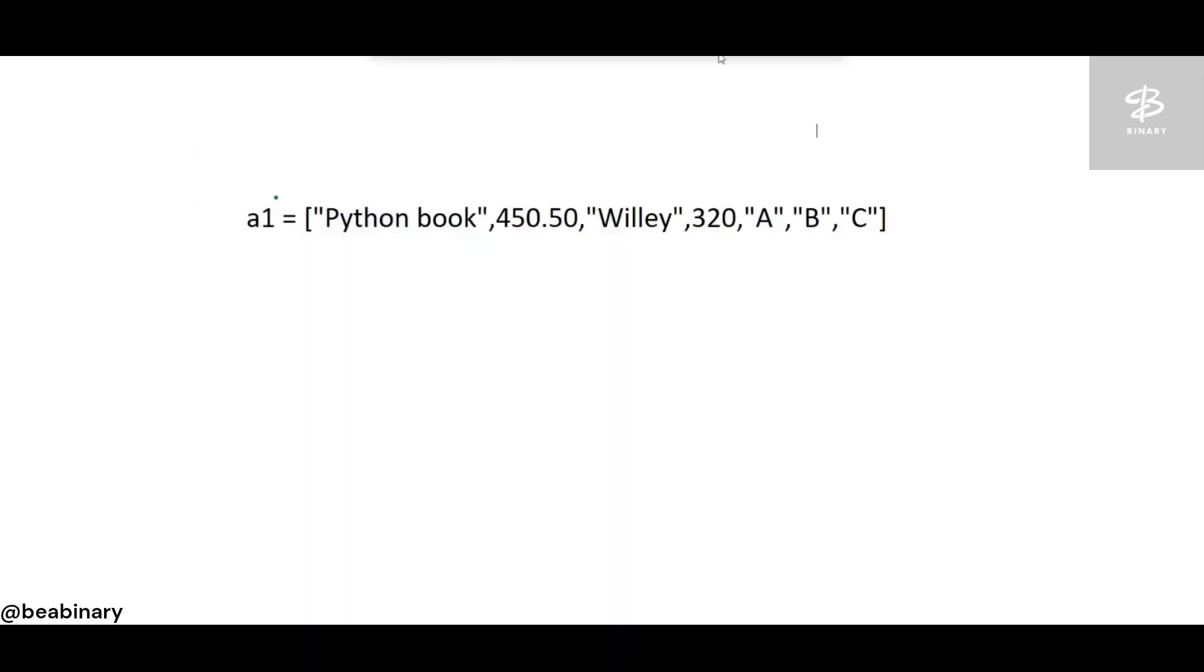Python book is stored at index 0, 450 at index 1, willy at index 2, 320 at index 3, a at index 4, b at index 5, c at index 6. What I have given in the print statement: I write a1 start with the 0, then go to 6. Six means 0 to 6 means 0 to 5 because last is minus 1, so it becomes 0 to 5. Then I mention the skip count, for example after 0, 2 would be printed, after 2, 4 would be printed.